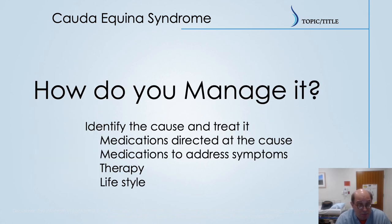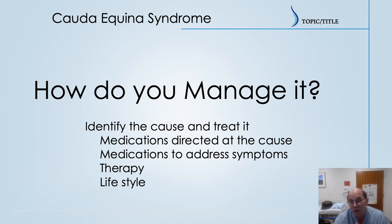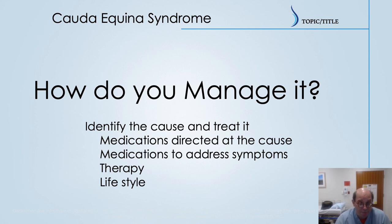How do we manage cauda equina syndrome? The first thing is to identify the cause. If you can find an inflammatory cause, you need medications directed at that inflammatory cause of non-compressive cauda equina. If a medication caused the toxicity, you need to stop that medication. Identifying the cause by going through all those possibilities is going to be critical. Once the cause is identified, you can try to treat it and hopefully improve symptoms.